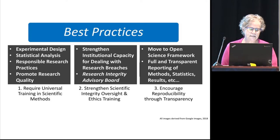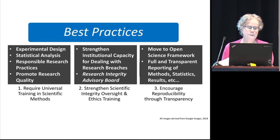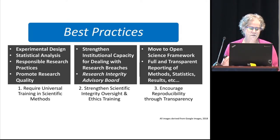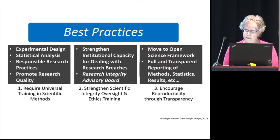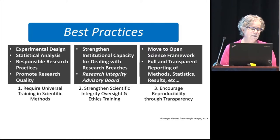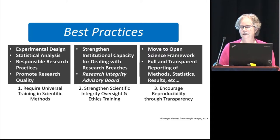The best practices include: number one, requiring universal training in scientific methods — things like experimental design, statistical analysis, responsible research, and promoting research quality. Number two is strengthening scientific integrity oversight and ethics training at various institutions, including strengthening institutional capacity for dealing with research breaches, and a proposal for consideration of a research integrity advisory board.